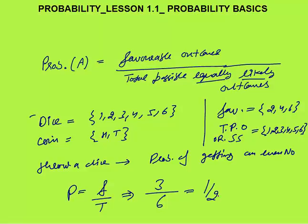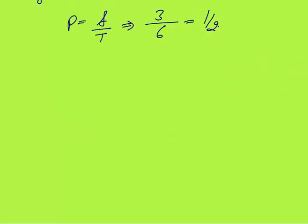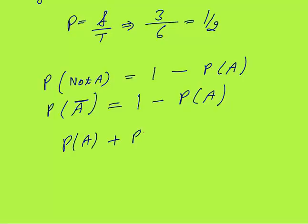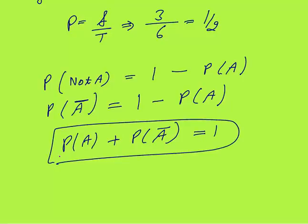That is the probability of event A. What about the probability of event A not happening? Probability of not A equals 1 minus probability of A. You can also write it as P(Ā) = 1 − P(A), or equivalently P(A) + P(Ā) = 1. This means the probability of A happening and not happening always sums to 1.